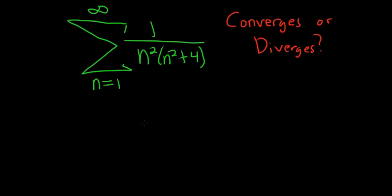Hey, what's up YouTube? In this problem we have an infinite sum from 1 to infinity of 1 over the quantity n squared times n squared plus 4. And the question is, does it converge or diverge?